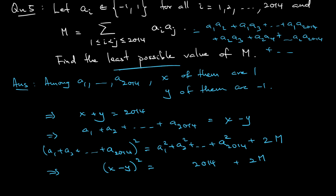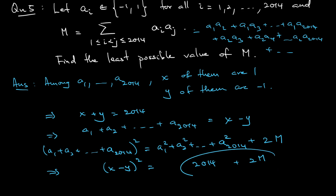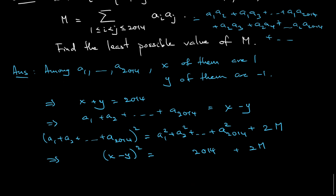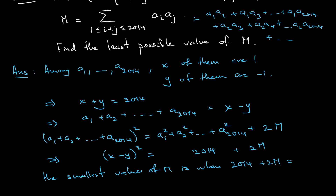To minimize M, we need (x−y)² to be as small as possible while being both an even number and a perfect square, and at least as large as 2014 (since M can be negative). The smallest even perfect square ≥ 2014 is 46² = 2116. So the minimum M occurs when 2014 + 2M = 2116, giving M = 51.